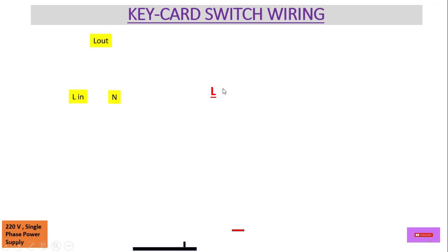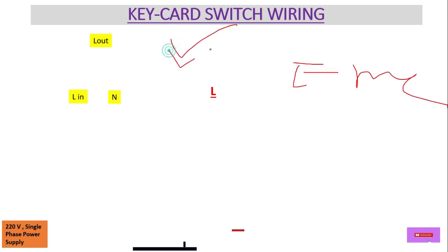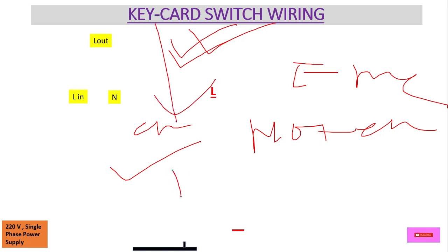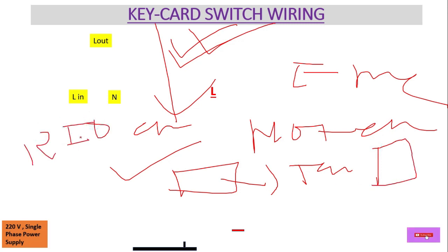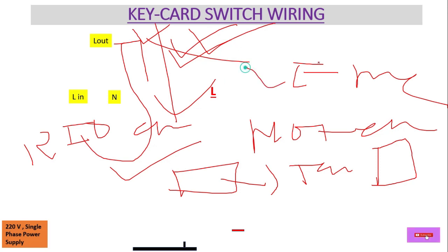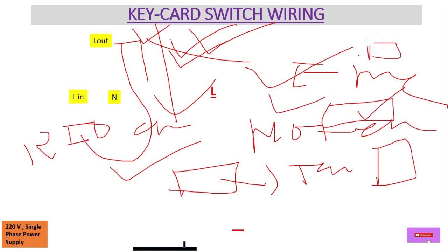So basically, what is a key card switch? Generally this switch is used for energy saving — that is the main purpose of this key card switch. It is generally used in hotel buildings and hotel rooms. It is operated through a card, the same card we also use for the RFID lock to open. If you insert the key card, it will switch on the lights, provide power to the AC and TV, which we can control from this key card switch.